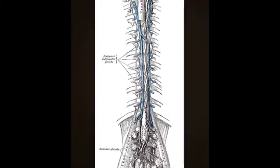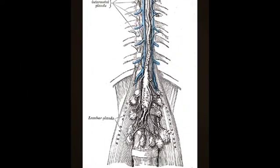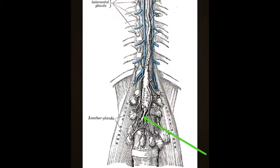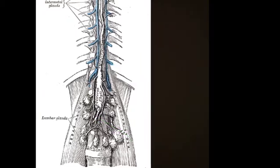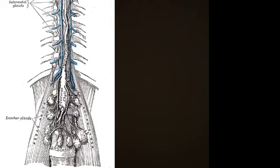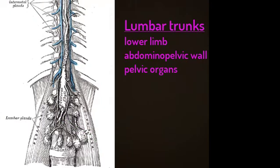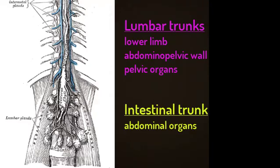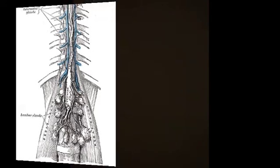Three main trunks come together to form the cisterna chyli, which is a dilated sac that marks the beginning or inferior end of the thoracic duct. These three trunks include the right and left lumbar trunks and the intestinal trunk. Lymph from the lower limbs, abdominal pelvic wall, and pelvic organs drains via the lumbar trunks, while the intestinal trunk drains most abdominal organs.